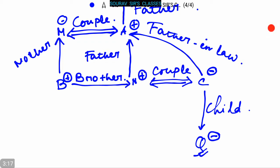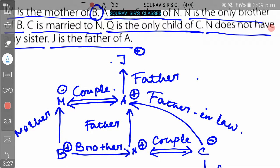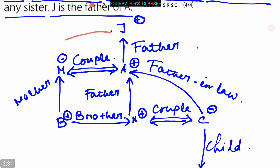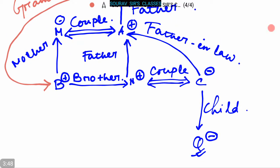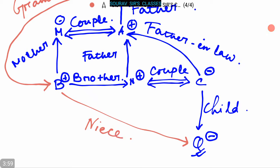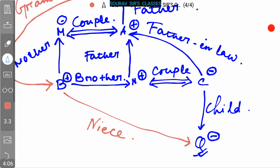Q is the child of C and N, and Q is a daughter. The relation between J and B is grandson — B is the grandson of J. The relation between B and Q is niece — Q is the niece of B. We have now prepared the relation diagram.